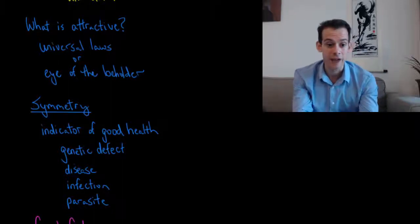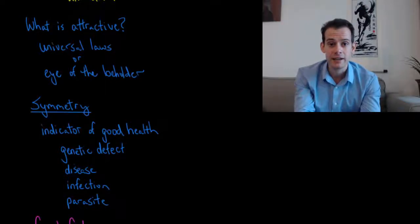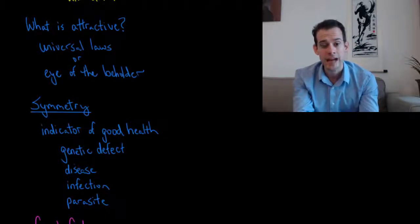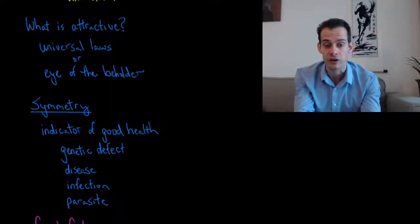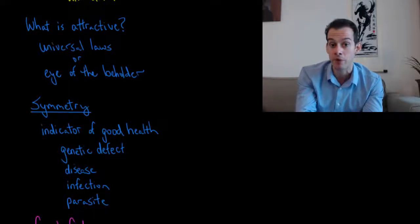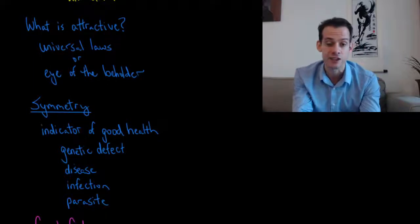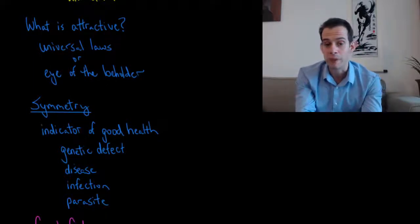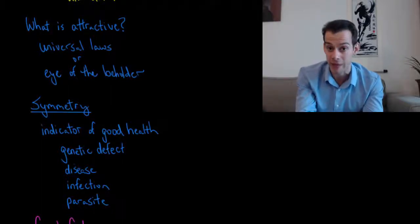Because if you have a genetic defect or a disease or an infection or a parasite, then these are things that might cause you to develop asymmetrically. And so somebody who's asymmetrical might have some genetic defect and when we're looking for attractiveness, what we're really looking for is a chance to pass on our genes to our offspring. And we want to pass on healthy genes and that means we want a partner who's also healthy. And so if there's a chance somebody has a genetic defect or an infection or parasite, then we probably don't want to pass that on. And that means we'll see that person as being less attractive as a potential mate.